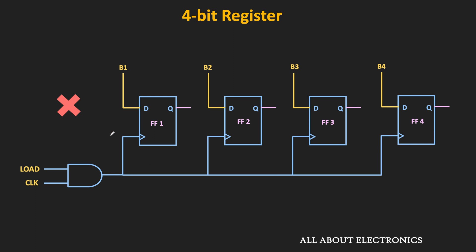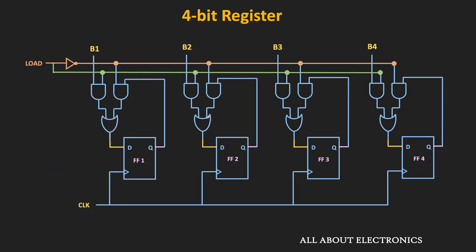So rather than controlling the clock signal, the operation of the register is controlled by controlling the data inputs. This is how the data bits are controlled using the load signal. Whenever this load signal is high, the data bits B1, B2, B3, and B4 will reach the flip-flop through this AND gate, and at the clock transition, that data will be loaded into the register. Now whenever this load signal is high, the load bar will become low, and therefore the output of the second AND gate will become 0 — meaning the second AND gate will remain disabled. Whenever this load signal becomes low, the output of the first AND gate will become 0. But since the load bar will become high, whatever output is present at the output of the flip-flop, the same will be given back to the input. In this way, the flip-flop will hold its current data.